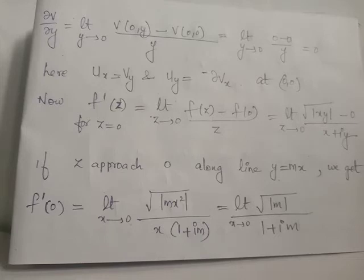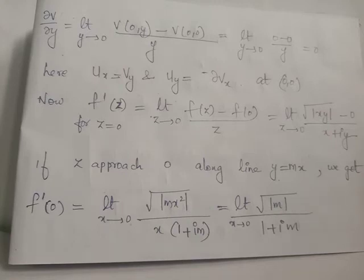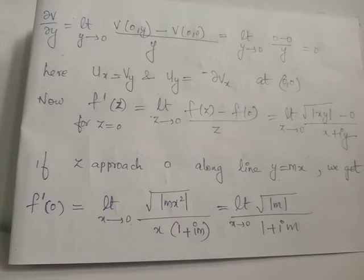Let us check f'(z) at z = 0 using the limit definition of the derivative. We have f'(0) = limit as z tends to 0 of [f(z) minus f(0)] divided by z. f(z) = √|xy| and z = x + iy. When z approaches 0 along the path y = mx, f'(0) along that path is given by limit as x tends to 0 of √|mx·x²| divided by x(1 + im), replacing every y with mx.